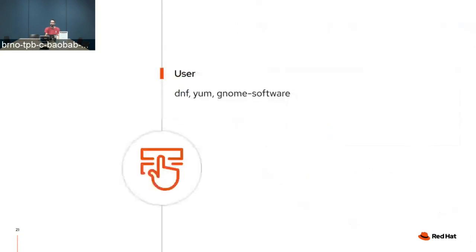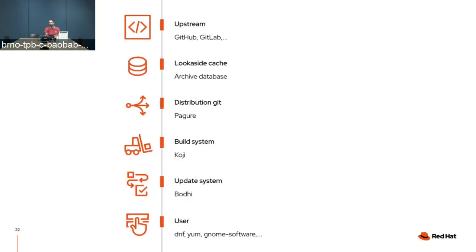Finally, when it reaches stable it gets into a new compose, and from there users can install that update and utilize the new code. To sum this up — there are a bunch of steps, and every step has commands to run and potentially hours to wait. This can easily take days from a new upstream release to getting the code to your users. At minimum it's hours, but usually it's definitely days. So František, can Packit help us with this?